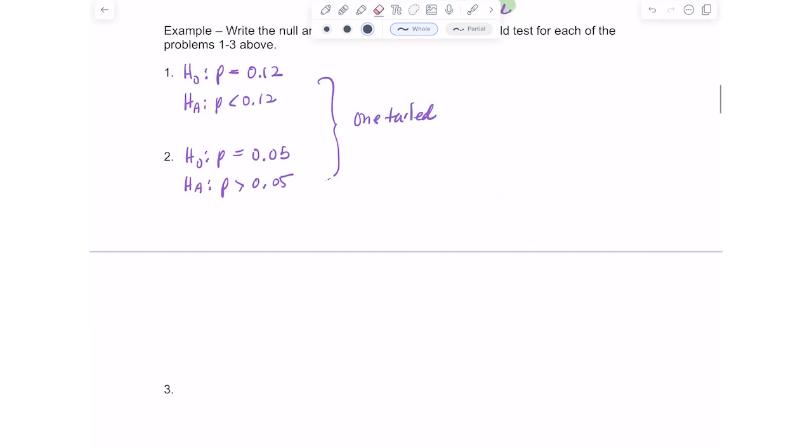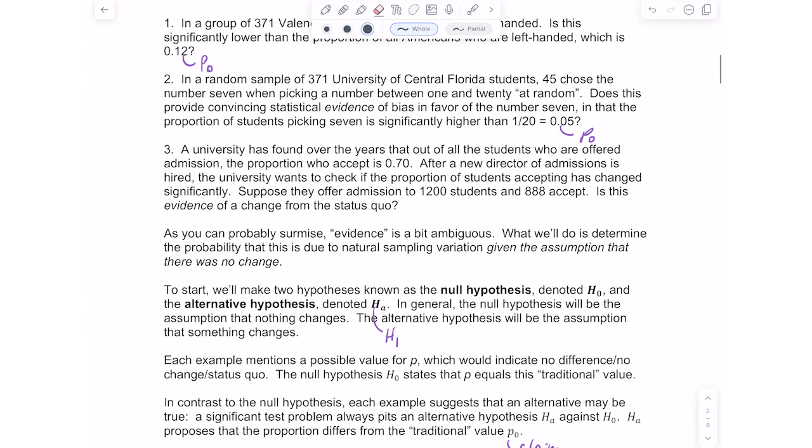For the third one, a university has found over the years that out of all the students who are offered admission, the proportion to accept is 0.70. After a new director of admissions is hired, the university wants to check if the proportion of students accepting has changed significantly. Suppose they offer admission to 1,200 students and 888 accept. Is this evidence of a change from the status quo? Here it's not saying anything about being greater or less than or higher or lower. It's just saying, is this evidence of a change?